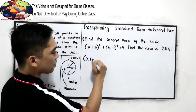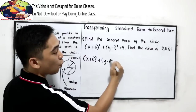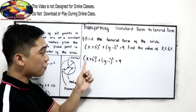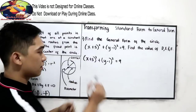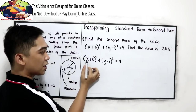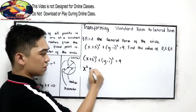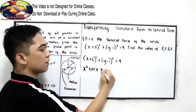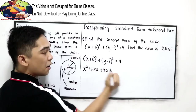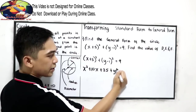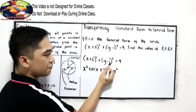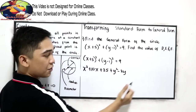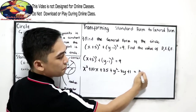So: x plus 5 raised to 2, plus y minus 1 raised to 2, is equal to 9. Expanding the square of a binomial: square the first term — x squared; multiply the first and second terms times 2 — positive 10x; square the second term, 5 squared — positive 25. Plus, square the first term — y squared; multiply the first and second terms times 2 — negative 2y; square the second term — positive 1; is equal to positive 9.